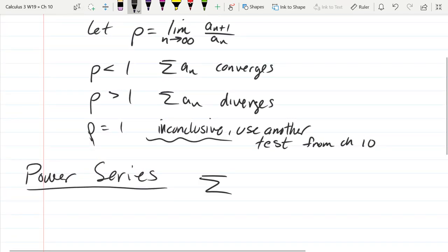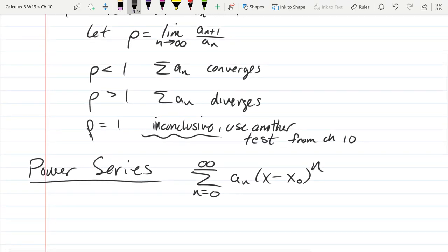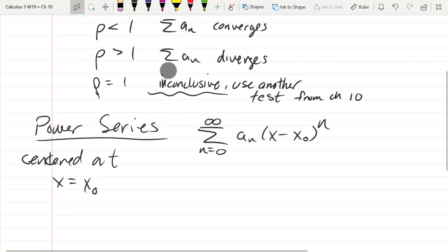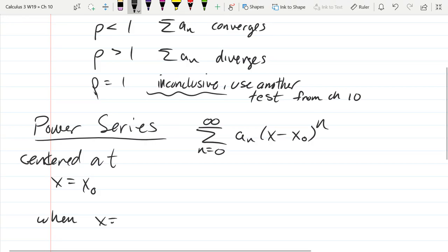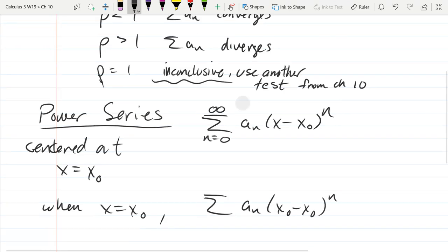So power series is still a summation. But now it's aₙ times (x - x₀)ⁿ. So it's actually a special type of series that has a variable inside of it. X is the variable. And x₀ is where the power series is centered. So this power series is centered at x equals x₀.